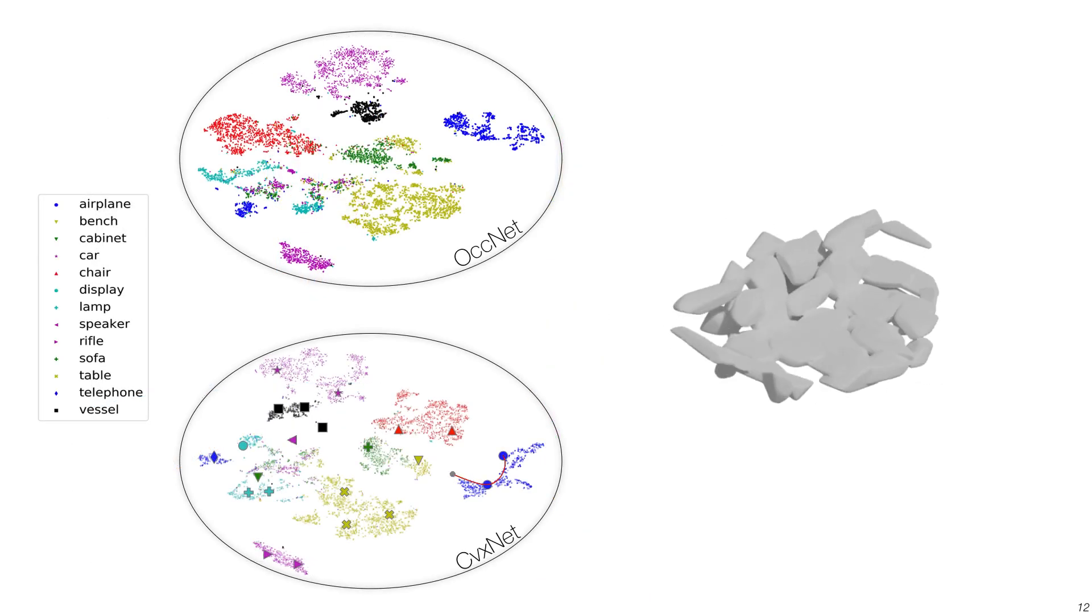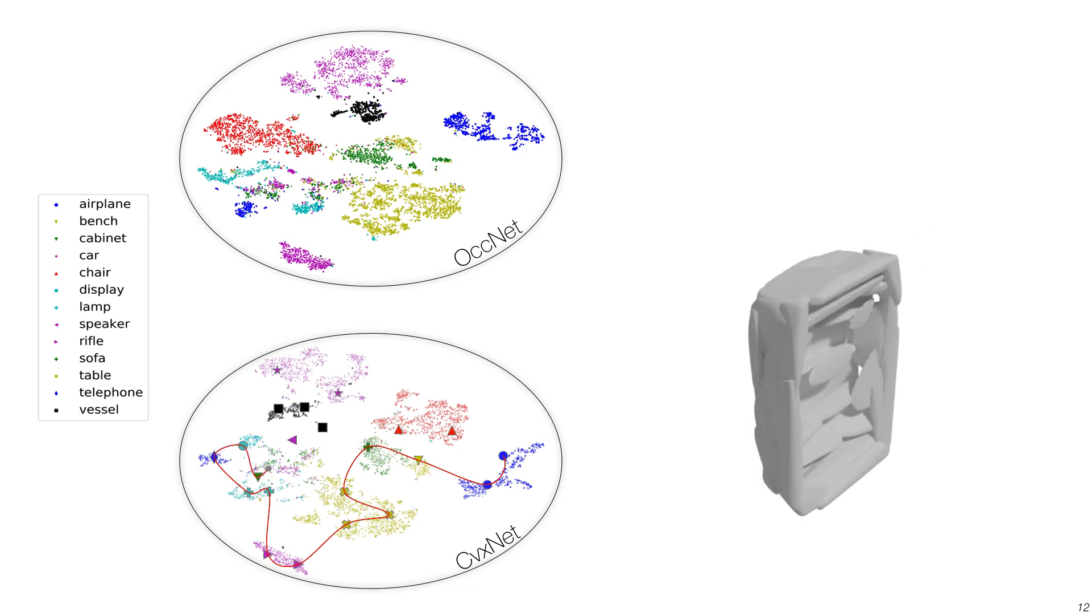Here, we visualize the t-SNE plot of ConvexNet. We also showcase the interpolation of geometry in the ConvexNet latent space. Note that shapes can be interpolated smoothly even across different object classes.